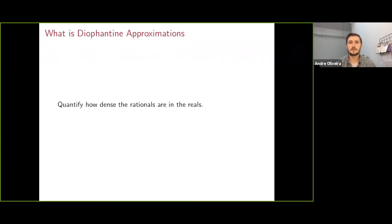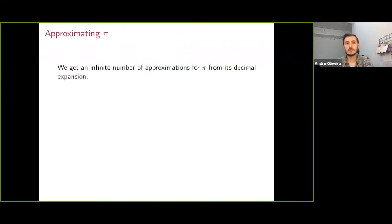An easy way to see this is through an example. Say we're trying to approximate pi. We know there's an infinite number of approximations to it by rationals using its decimal expansion.